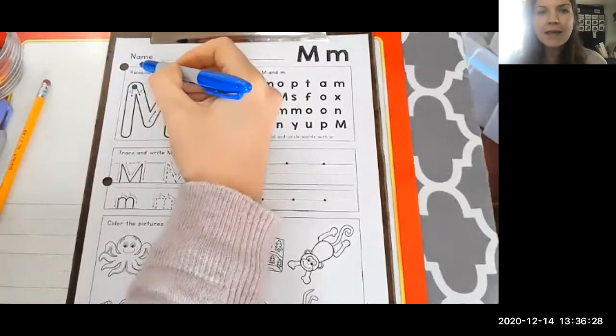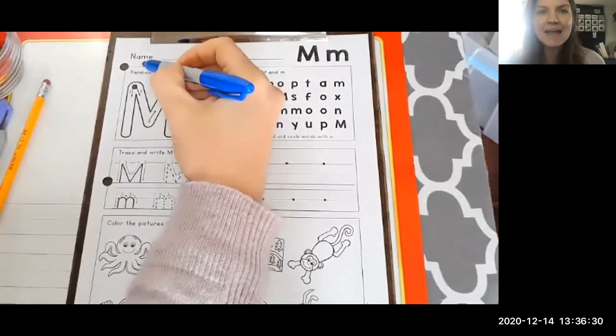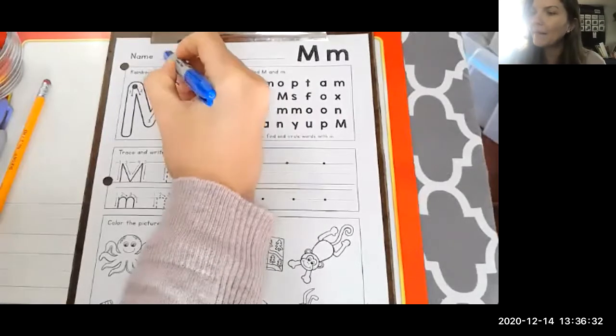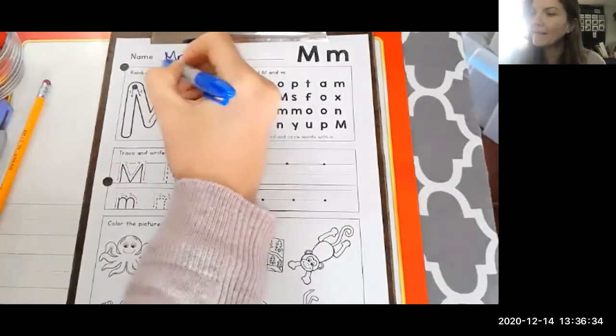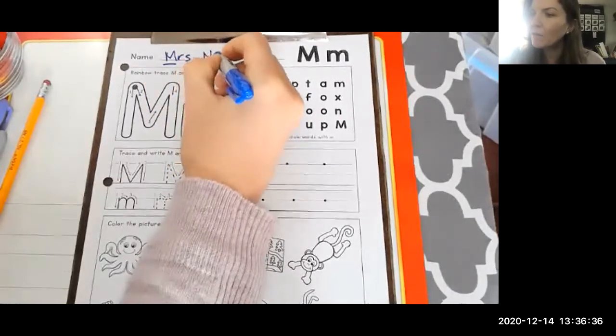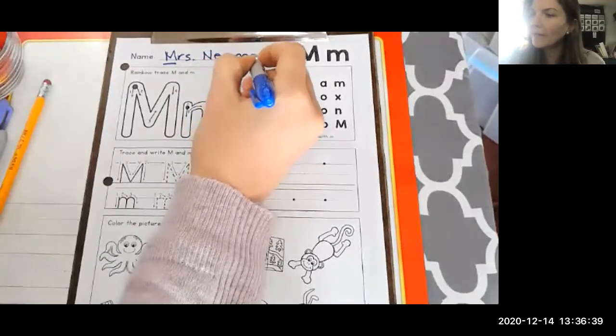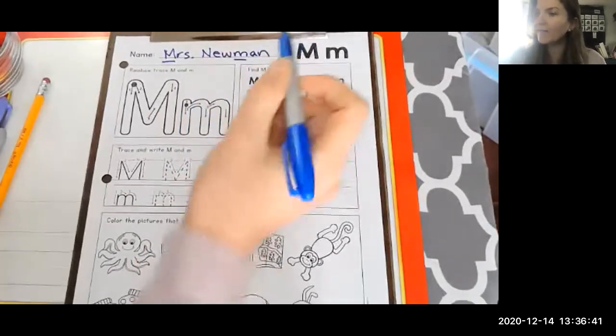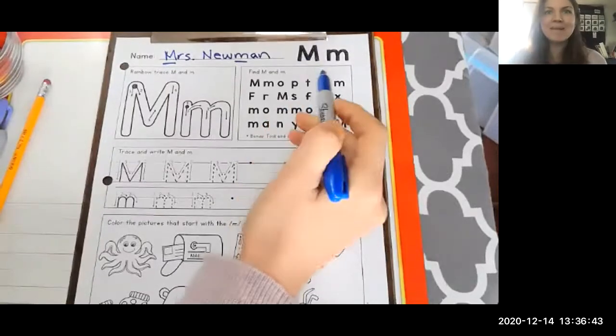We always start with our name. Look, N-A-M-E. There's an M in name. And my name is Mrs. Newman. There's an M here, new man, and there's an M here. There's a lot of M's. Let's make that M sound.